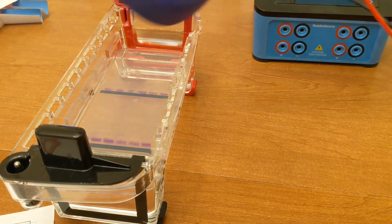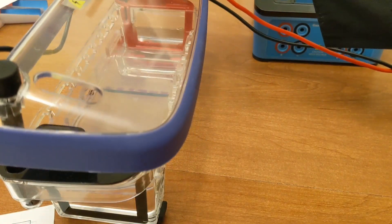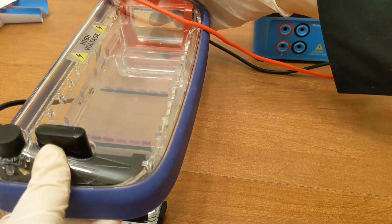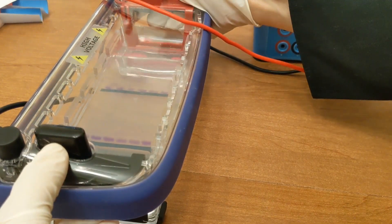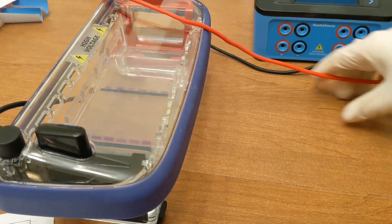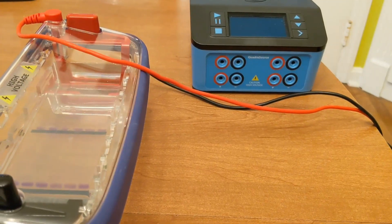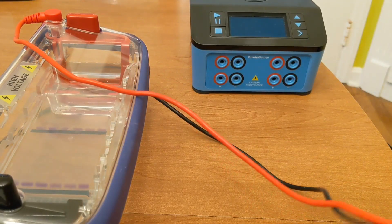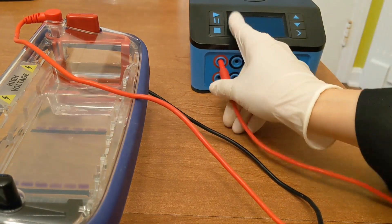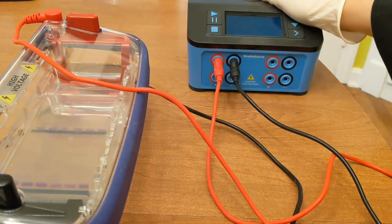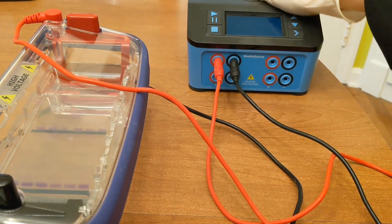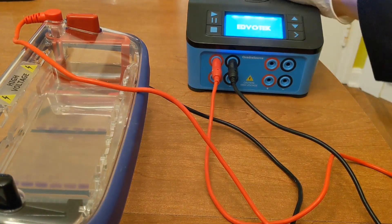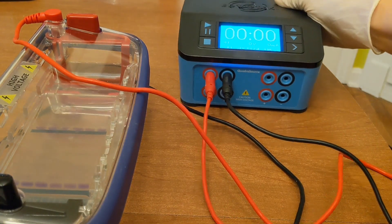The next step is to put the lid on. We want to attach black to black and red to red. Try not to move your chamber so you don't disturb your DNA. And it'll click down into place. Then we're going to connect to the power source. Again, we're going to do black to black and red to red. We could use any of these four areas to plug in. Once all teams are connected to the power source, then you can go ahead and turn it on. There's a switch in the back that you flip to turn it on.